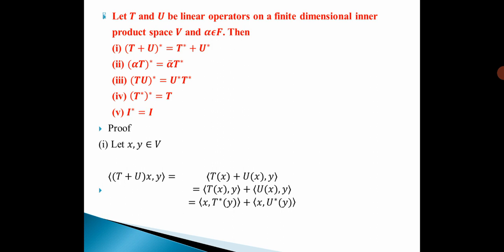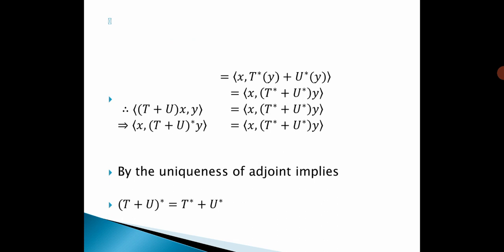By using the properties, we get the inner product of x, T*(y) plus the inner product of x, U*(y). That is, the inner product of x, T*(y) + U*(y). Taking T* + U* as common, we write the inner product of x, (T* + U*)(y). Therefore, the inner product of (T+U)(x), y equals the inner product of x, (T*+U*)(y). By the uniqueness of the adjoint, (T+U)* = T* + U*.